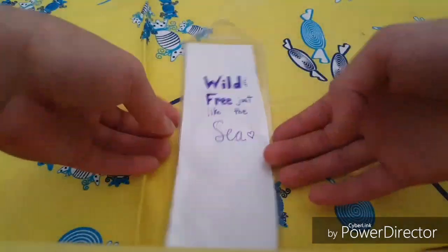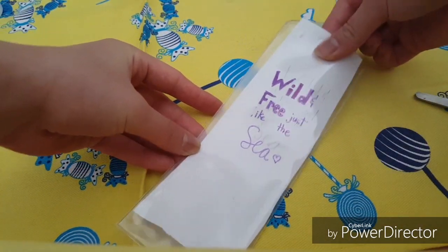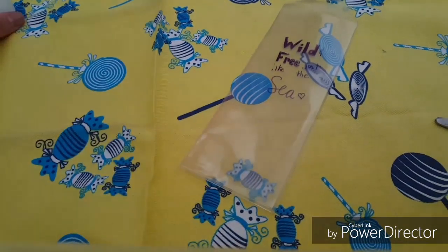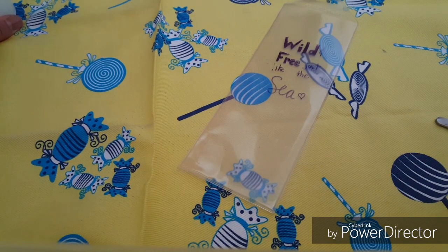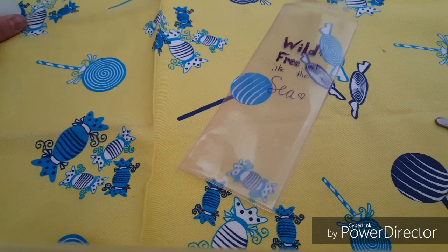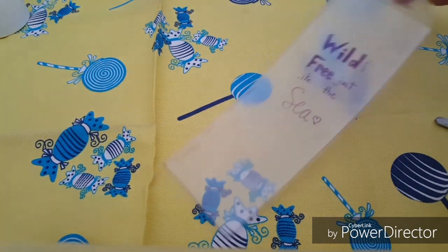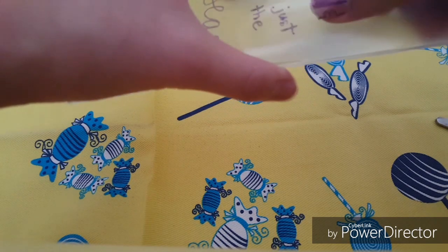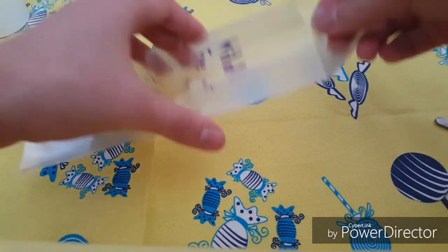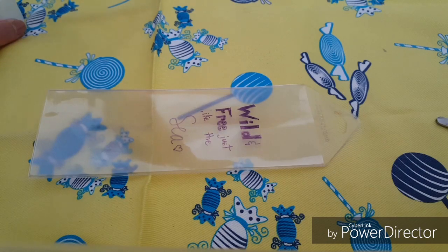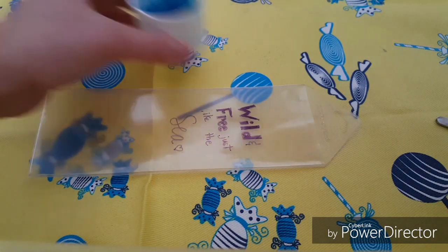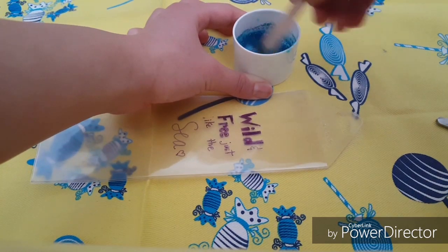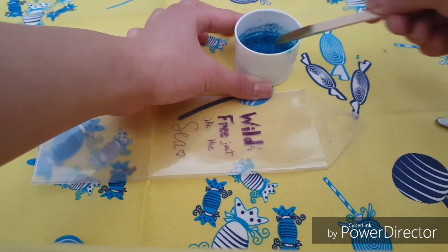So after you finish writing your quote, it should look like this and you can take out your paper that you had your quote on. And you can start filling in the plastic cover with your blue water mix that has glitter in it.